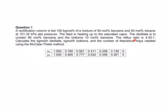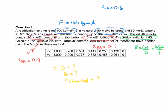The last part is for you to calculate the amount of distillate, amount of the bottom, and the theoretical number of trays needed using the McCabe-Thiele method.